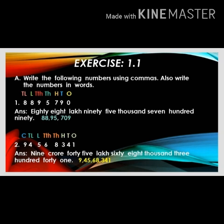Question number two: the given number is 9,45,68,341. First we have to mark the place value above the number — ones, tens, hundreds, thousands, ten thousands, lakhs, ten lakhs, crore. With the help of place value we write the number name: nine crores, 45 lakhs, 68 thousand, three hundred and forty-one. According to the period we put the comma — the periods are crore, lakhs, thousands, and ones.